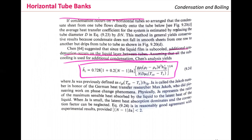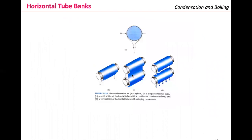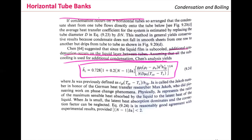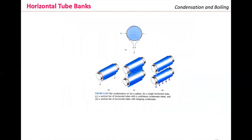The equation applies where condensate flows directly onto the tube below, as shown in figure 9.20 in your 8th edition. The average heat transfer coefficient is estimated by replacing the tube diameter by D·n, where n is the number of horizontal tubes. This method yields a conservative result because condensate does not fall in smooth sheets but drips from one tube to the other.